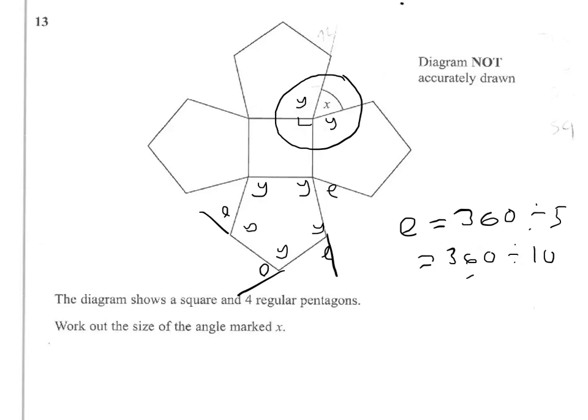So 360 divided by 10 is 36, and 36 times 2 is 72. There are other ways of doing it, but that's quite a neat way.